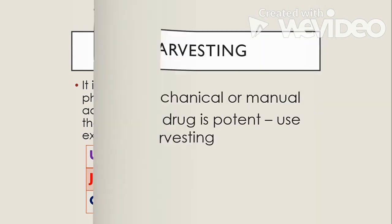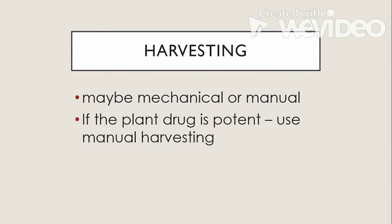Next is harvesting. Harvesting may be done manually or by the use of machines. But if the plant drug is potent, you need to use manual harvesting so that the amount of constituent may not be altered. When you say potent, it means it produces a strong effect even in a low dose.